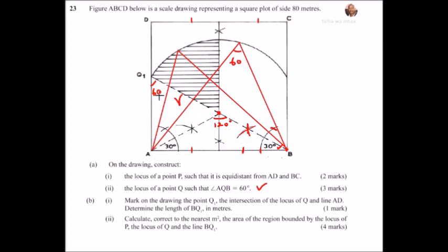So that is how we are getting the locus of Q, such that at any point, if you put Q there, that angle will be 60. This angle is 60. If you put your Q there, so all the angles that will satisfy is there. So let's go to the next point, B, mark on the drawing point Q, the intersection of the locus of Q and AD. So this is AD, so this is where you mark your Q. So that is how you end up with the Q one.